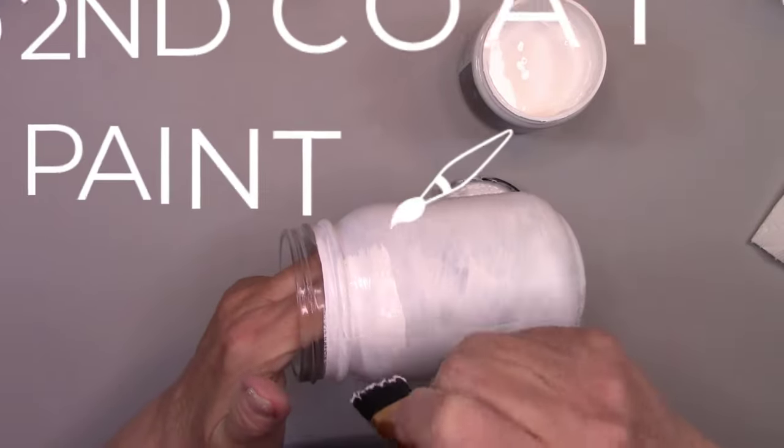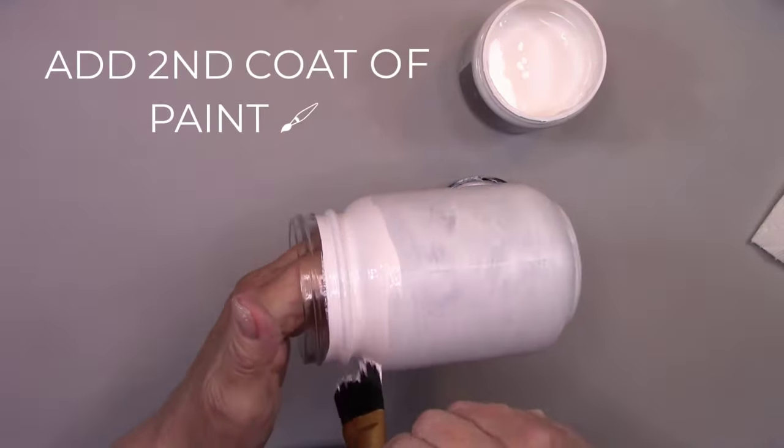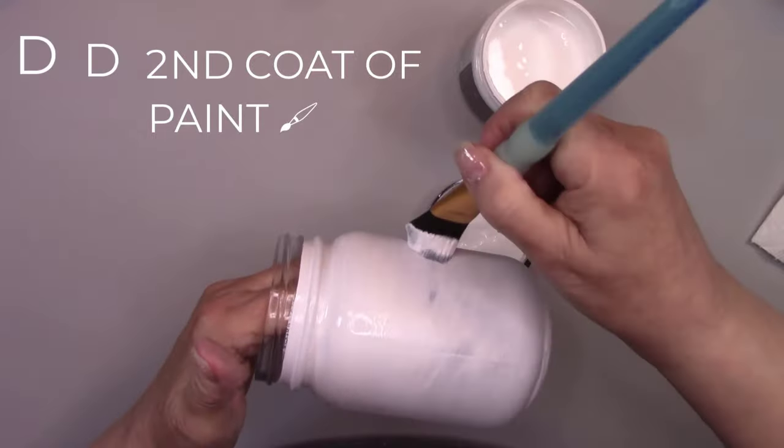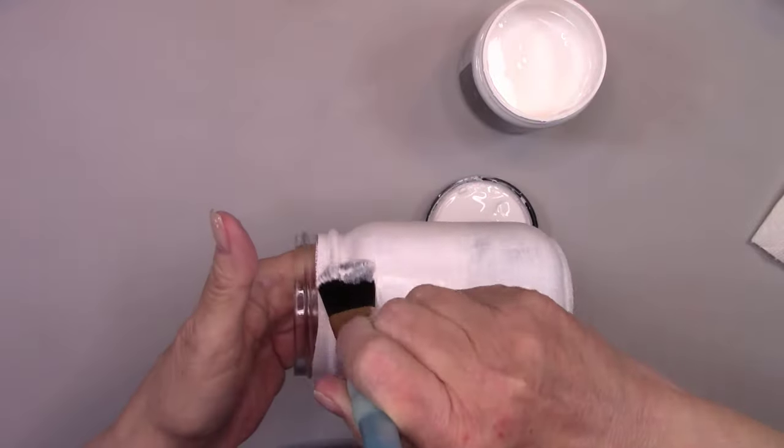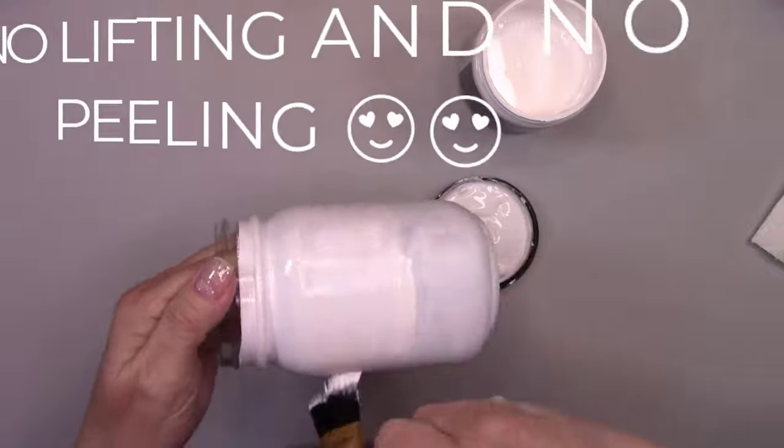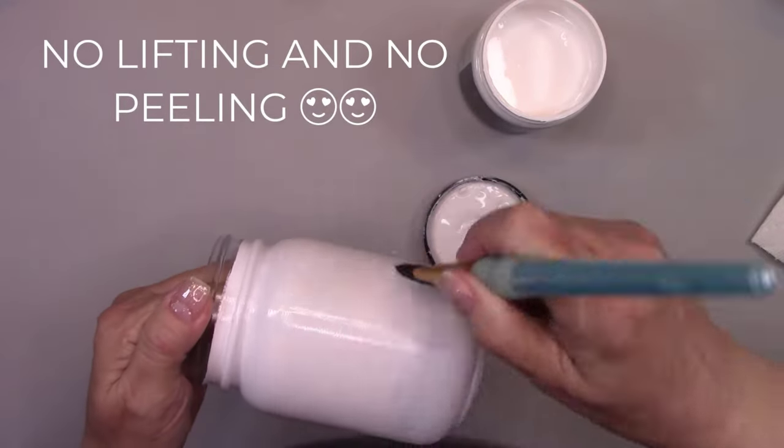And if you're going nice and smooth, the second coat of paint goes on when you add the matte sealer between coats. It leaves a nice, smooth finish. Nothing is lifting off the jar and nothing is peeling off the jar.